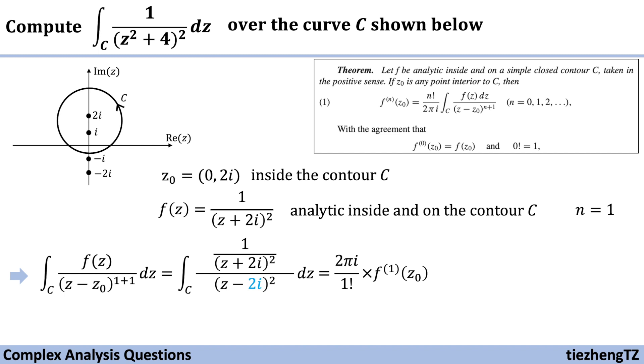And we just need one additional step to figure out the first derivative of f(z), which is -2 over (z + 2i) to the power of 3. So we just substitute the first derivative back. We have 2πi times -2 over (2i + 2i) to the power of 3. Note that 1 factorial is 1. Now we only need to do some simple math. It becomes 2πi times -2 over -64i. And the final answer is π over 16.